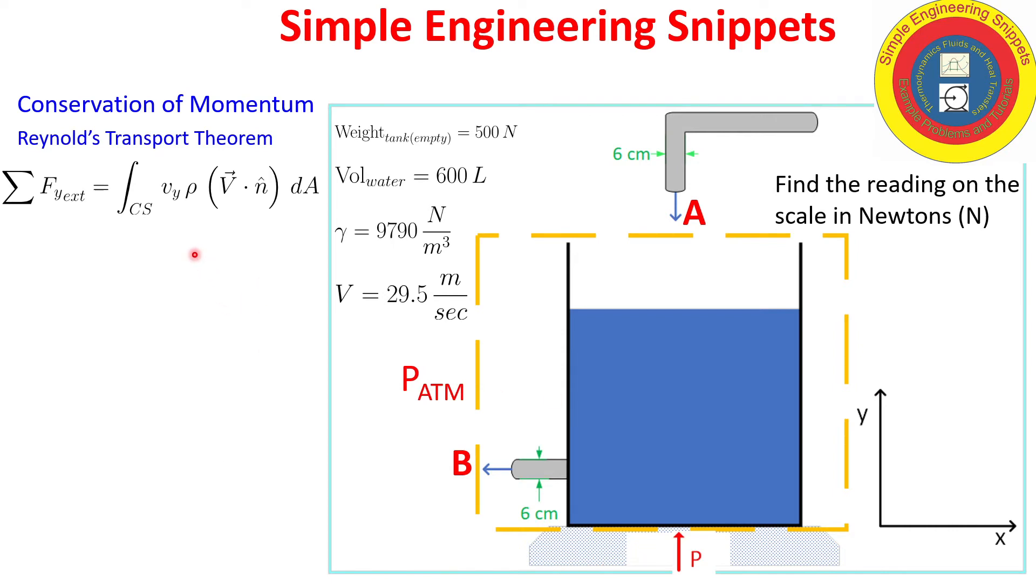Conservation of momentum is a vector equation. However, since we're only dealing in the y direction, we can just use the y component of the vector equation. And let's go ahead and step through. So the left hand side is the sum of the external forces in the y direction. And while we have a positive supporting force denoted as P in the plus y direction, we have the weight of the tank acting in the negative y direction, and the weight of the water also acting in the negative y direction.